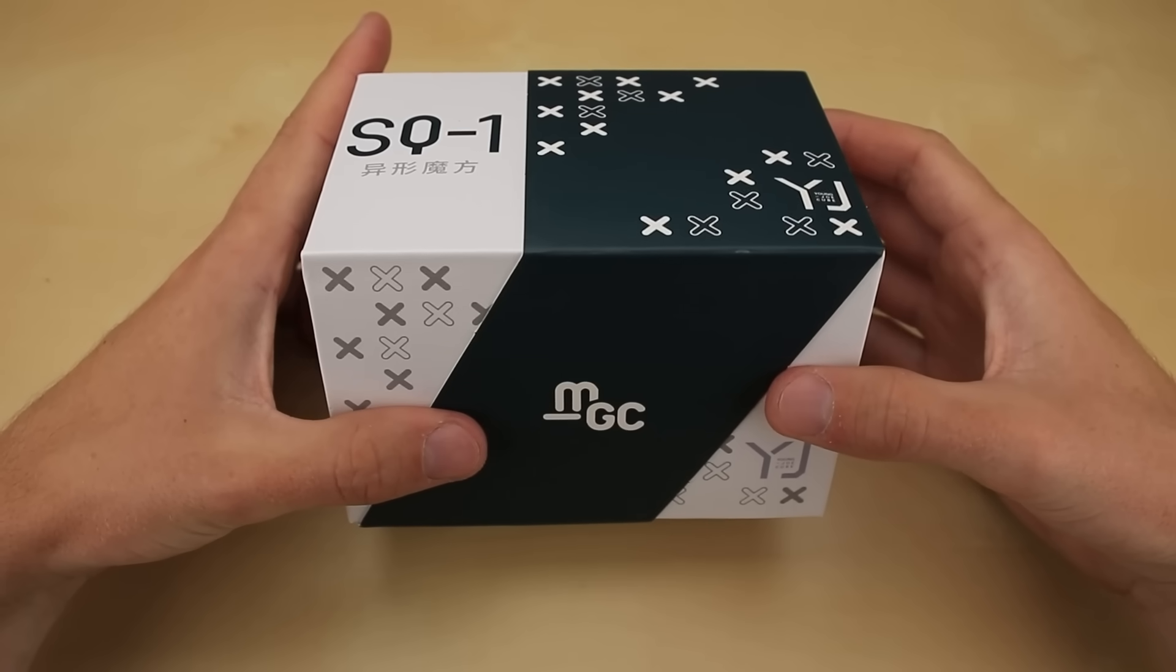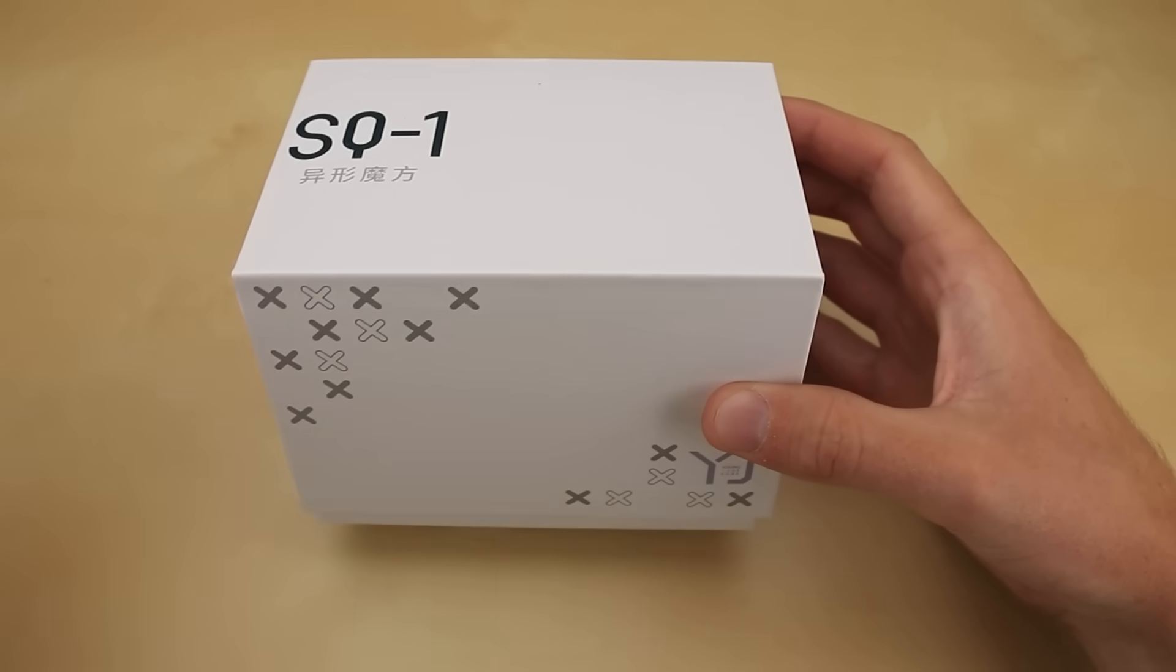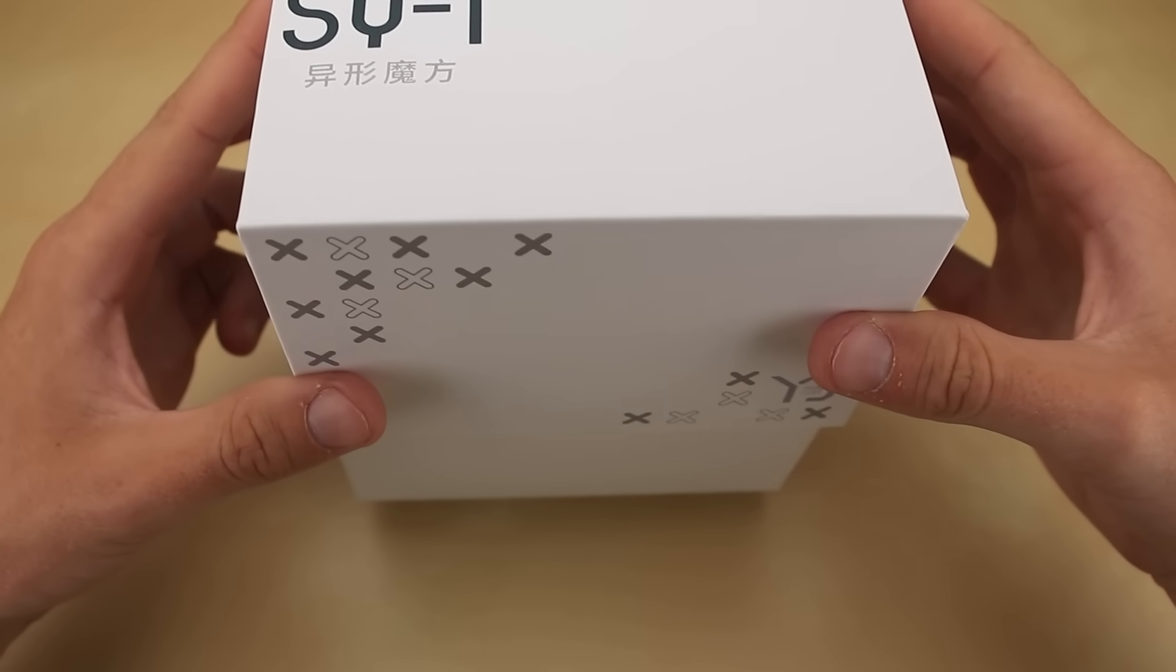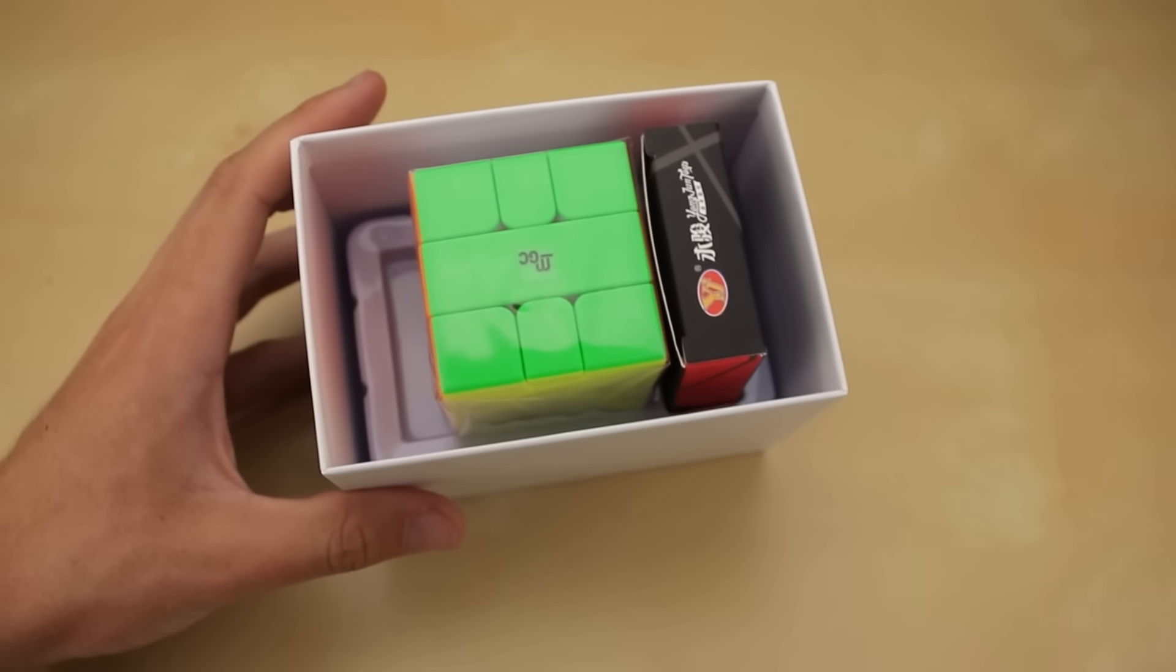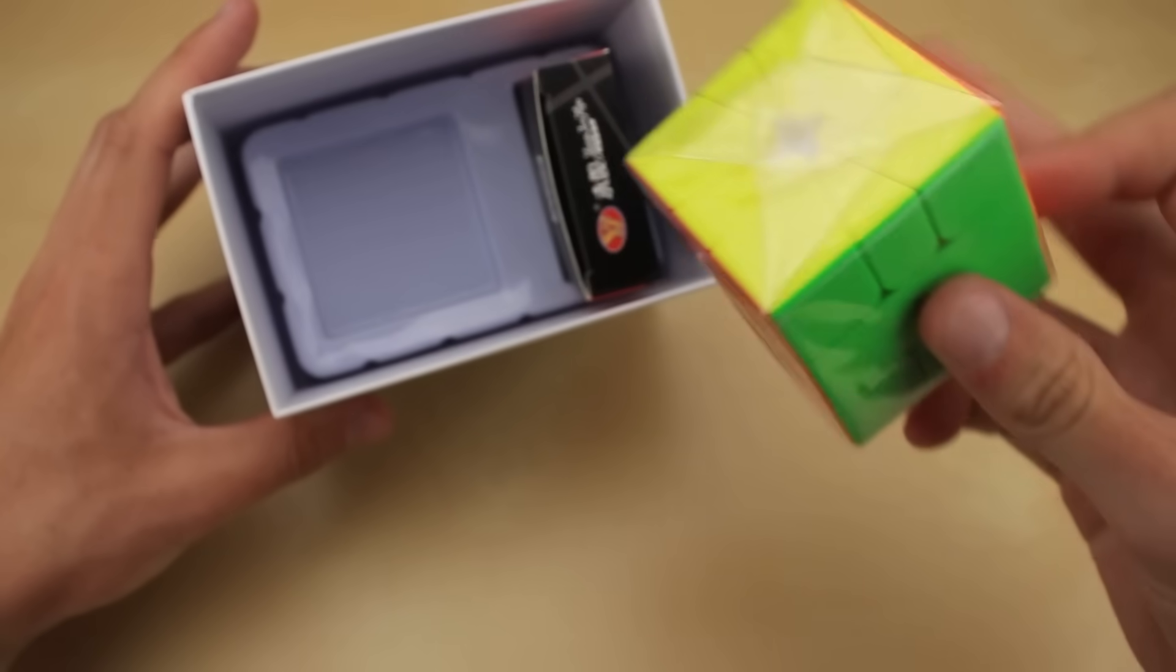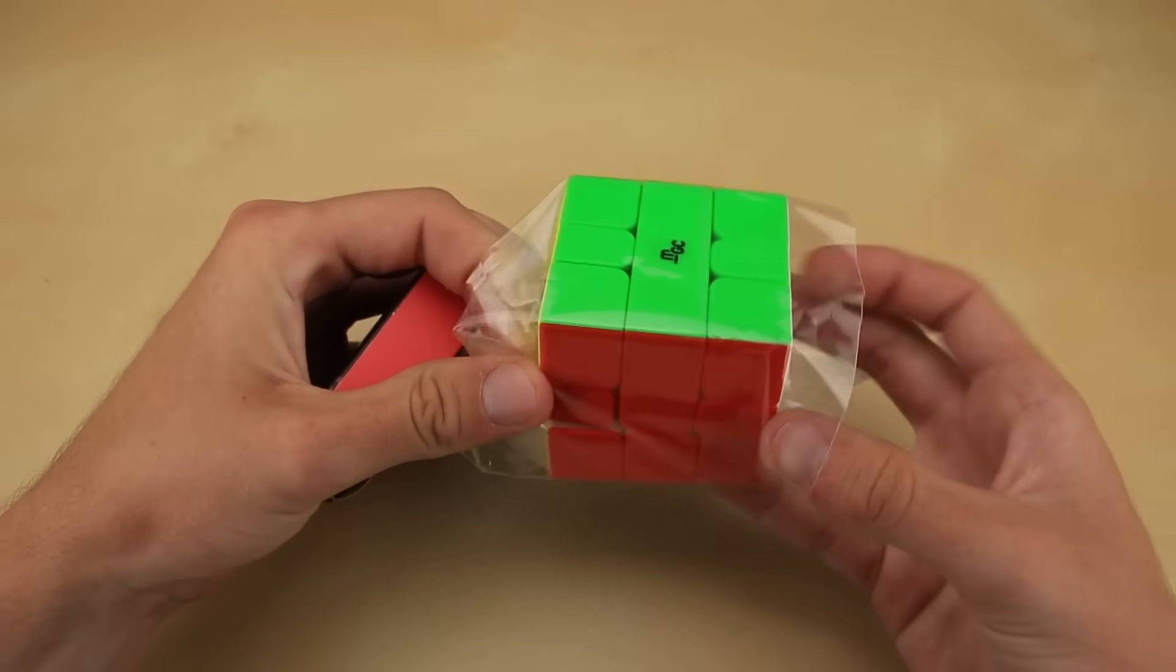So let's finally break my new Square One out of its package, the YJ MGC. From everything that I've heard, this is the current best Square One on the market, so it should be a very good puzzle to begin with. I've also had a lot of luck with MGC puzzles so far, their 4x4, 5x5, and 6x6 are amazing, so let's try it out.